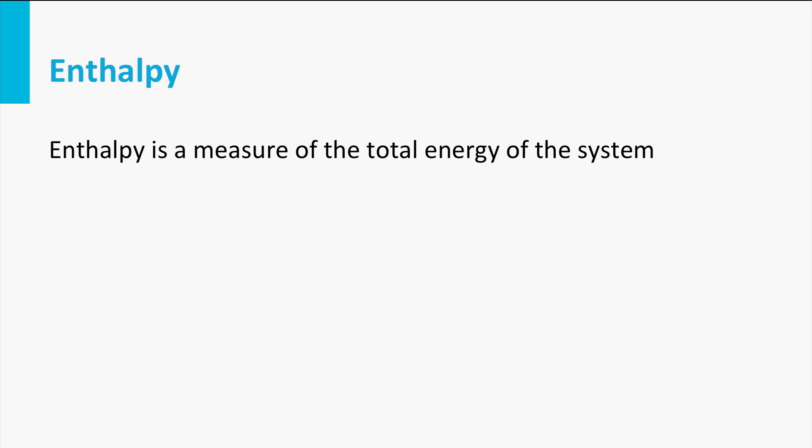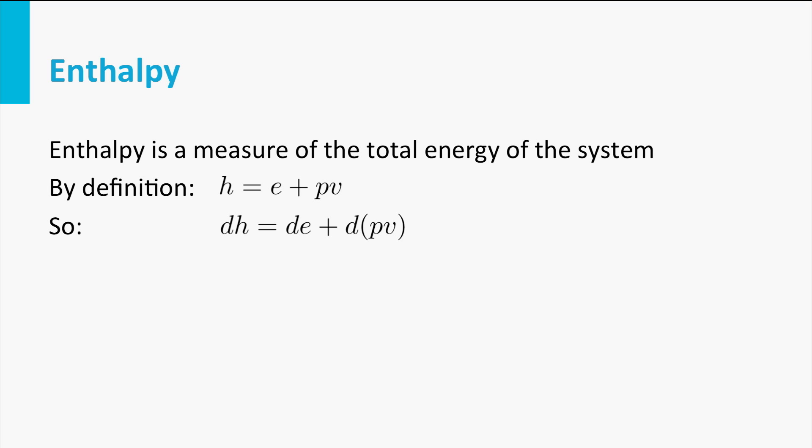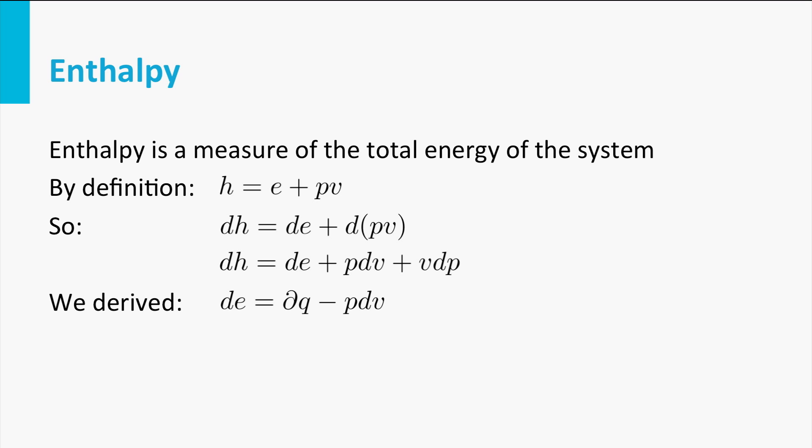Now let us introduce another quantity of the flow: the enthalpy h. Enthalpy is a measure of the total energy of the system, and it is defined as h = e + p·v. If we differentiate this equation, we get dH = dE + the differential of pV, which we can write as p dV + v dP. For dE we found dE = delta Q − p dV. Inserting these two equations, we find dH = delta Q + v dP.